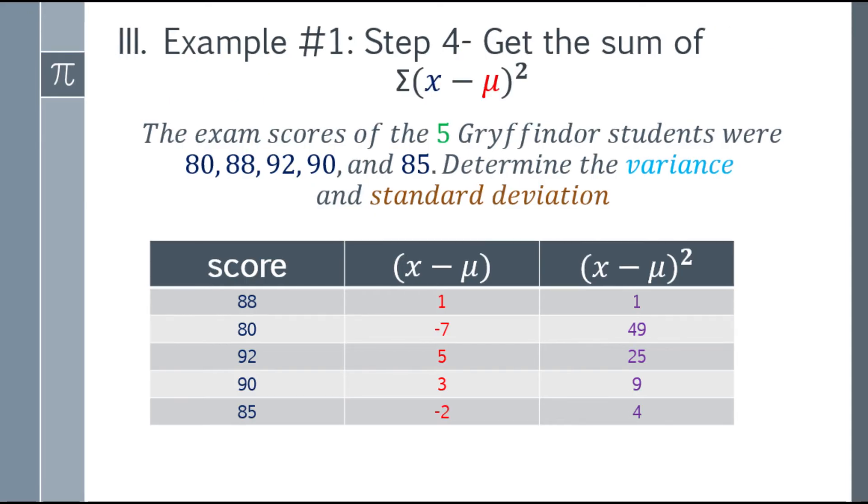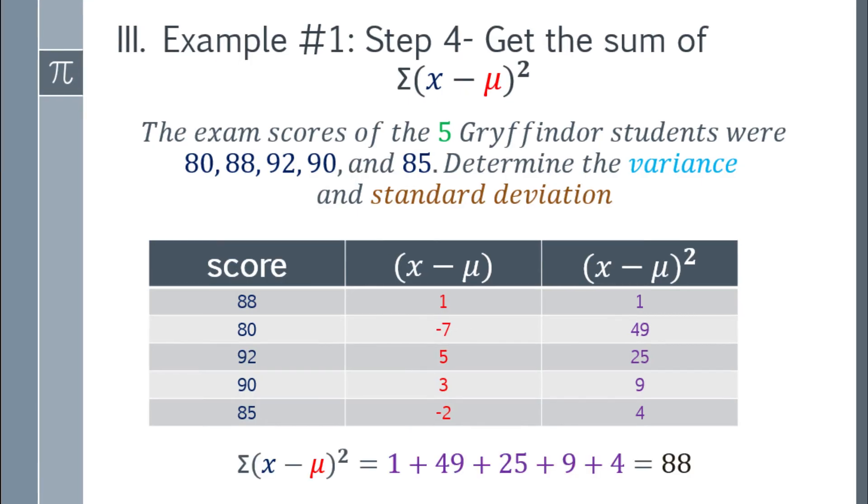Okay. Next step, we need to get the sum of those numbers. So, add them together, that will be 1 plus 49, plus 25, plus 9, plus 4. The sum will be 88.